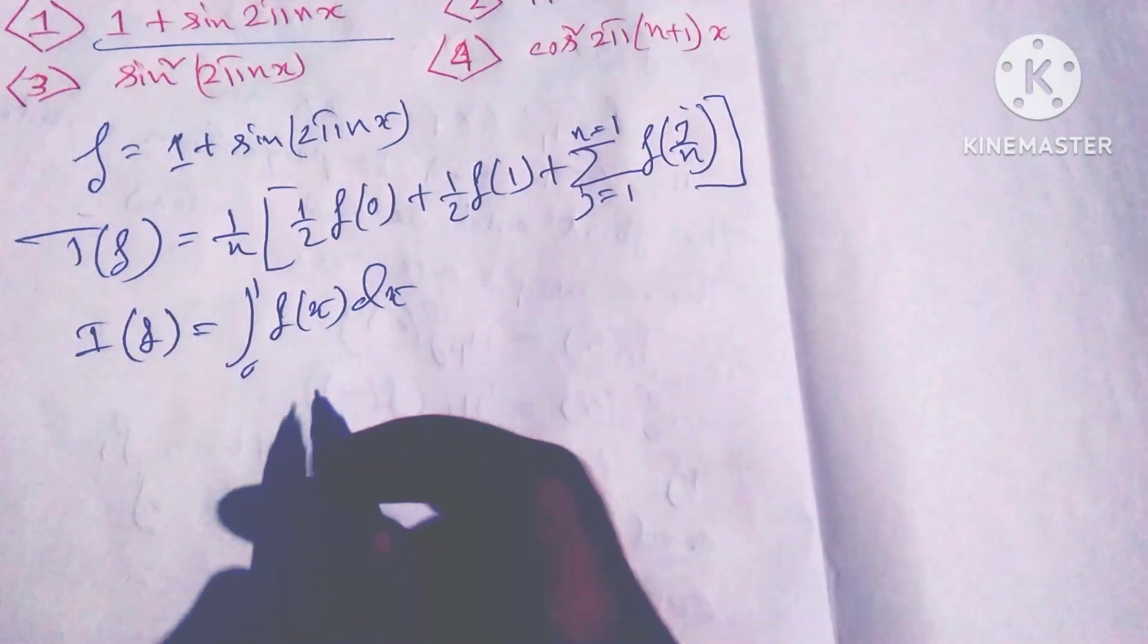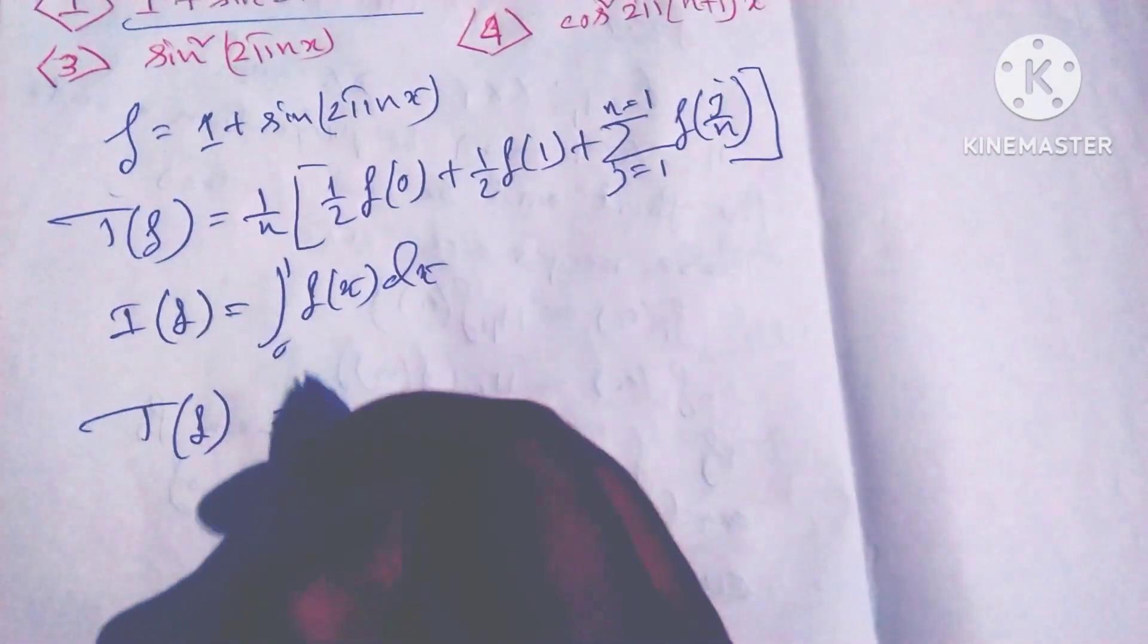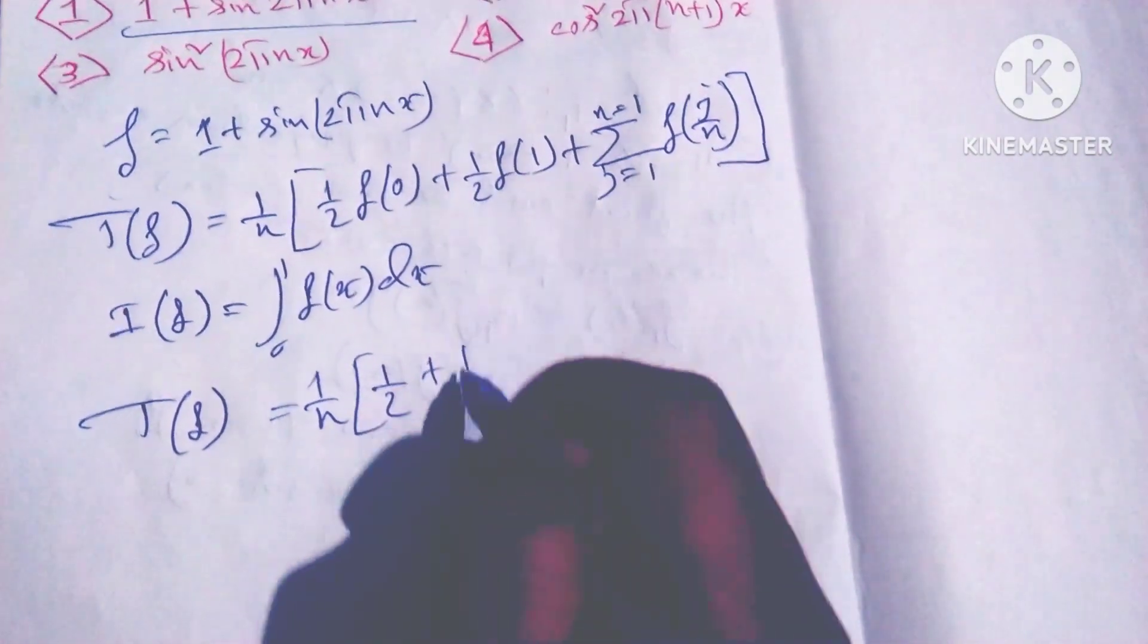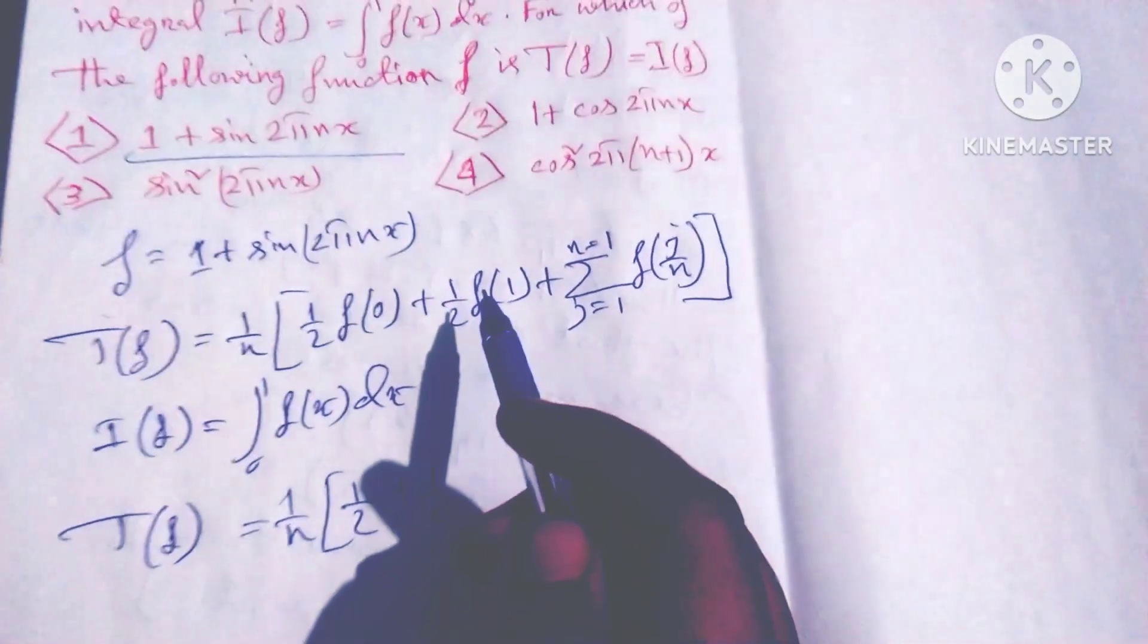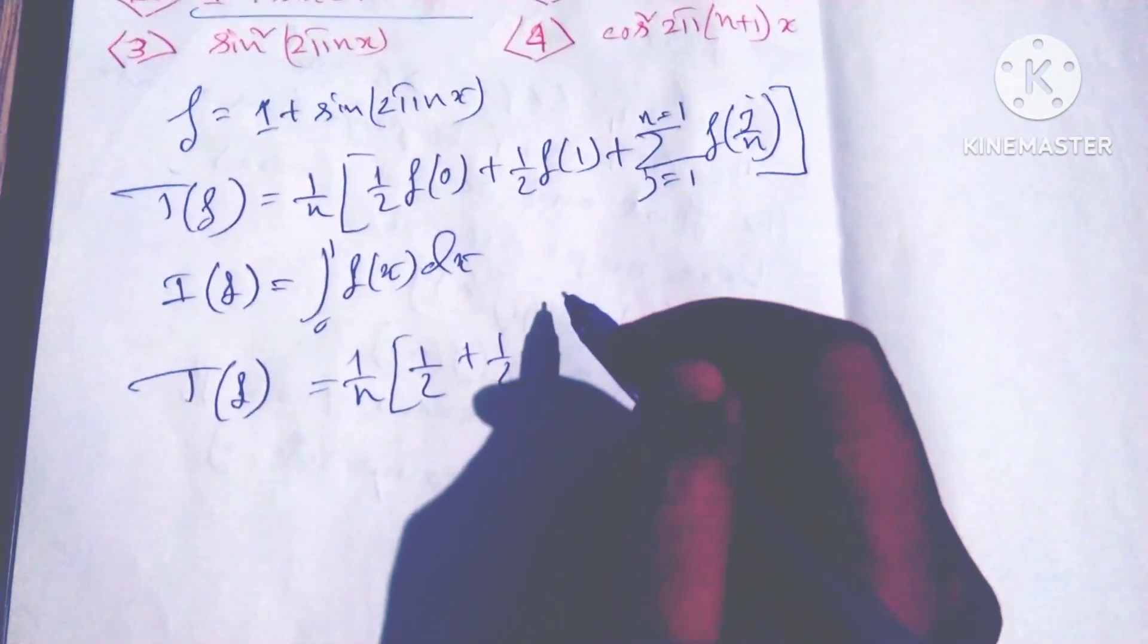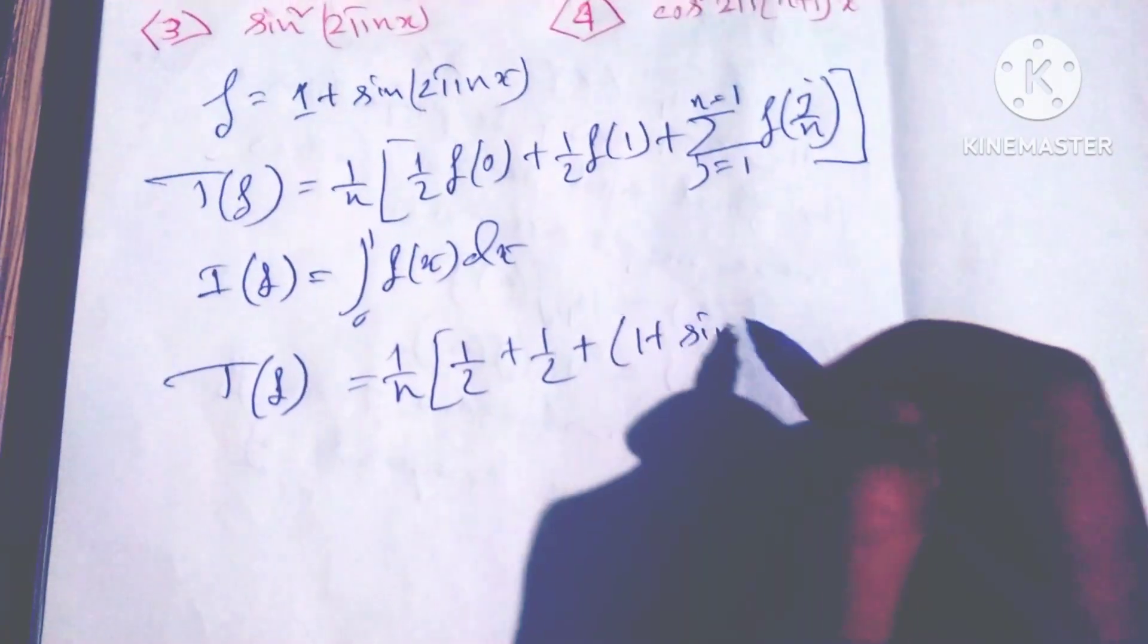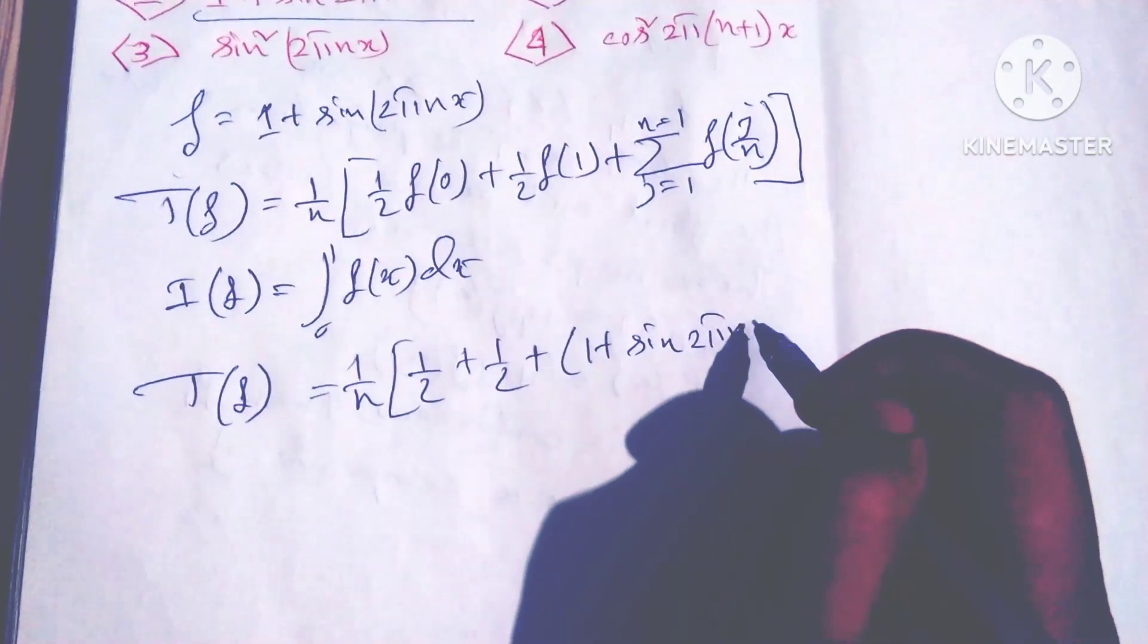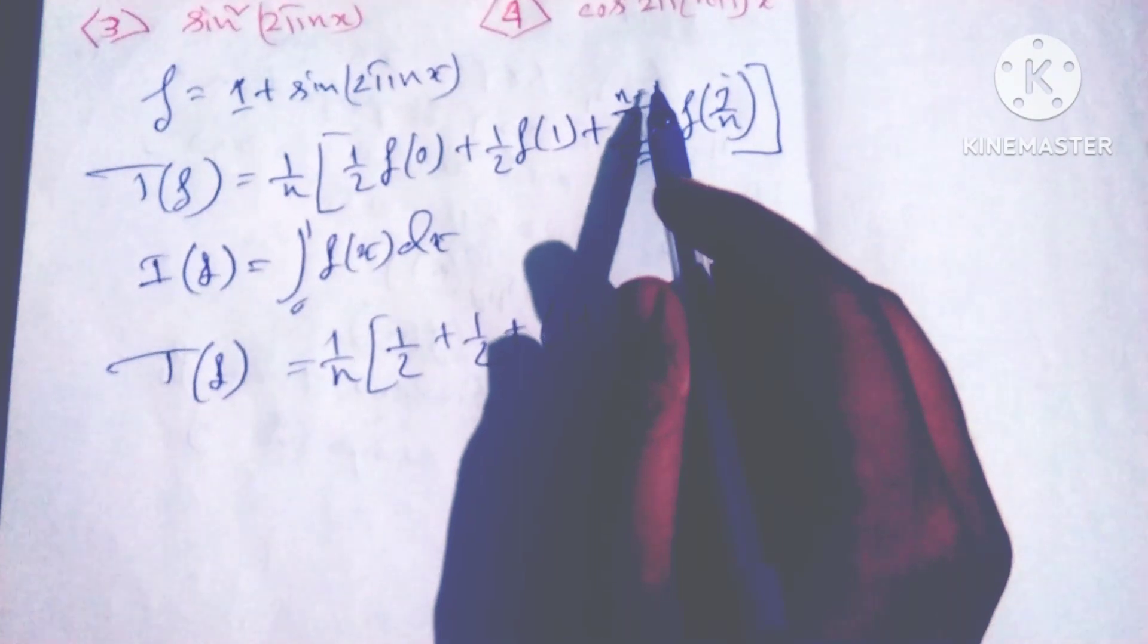So friends, T(f) equals 1 by n times [½f(0) plus ½f(1)]. This equals also ½, okay? ½ plus 1 plus sine 2πn times n, and j/n where j equals 1 to...